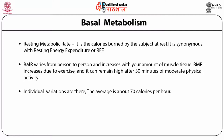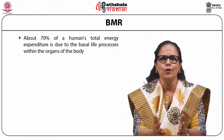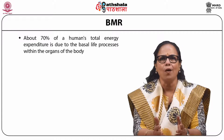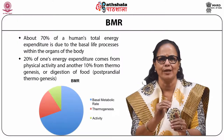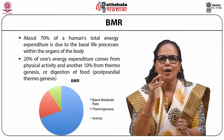Individual variations in BMR exist. The average is about 70 calories per hour. BMR is measured when a person is awake but at complete rest under very restrictive circumstances. For accurate BMR measurement, the person's sympathetic nervous system should not be stimulated. RMR is measured under less strict conditions. About 70% of a human's total energy expenditure is due to basal life processes within the organs of the body. 20% comes from physical activity and another 10% from thermogenesis or digestion of food.